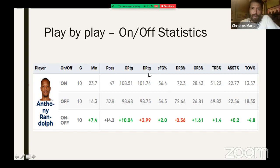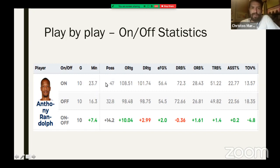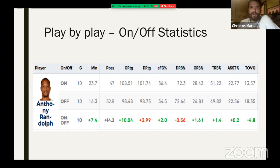On the other hand, looking at defensive rating, he wasn't as efficient on the defensive end for his team. But overall, he's a plus. In the 23.7 minutes and 47 possessions he played, Real Madrid was consistently outperforming opponents because they played better offense, and their defense wasn't bad either. Andrew Randolph — when he plays, it doesn't matter what he does individually on the floor. It's not about his personal stats. The team plays better with him on the floor, and that's what you need to know.